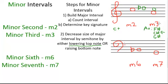Now let's try our minor sixth. The first step again: build the major interval. Count up six all the way up to a G. Take the key signature of the bottom note — that's a B flat, meaning we are in B flat major. B flat major has two flats: a B flat and an E flat. So that G is within our key signature of B flat major, meaning that right now we have a major sixth. Now we will decrease that by adding in a flat, making that a G flat — down a semitone — and we have a minor sixth.